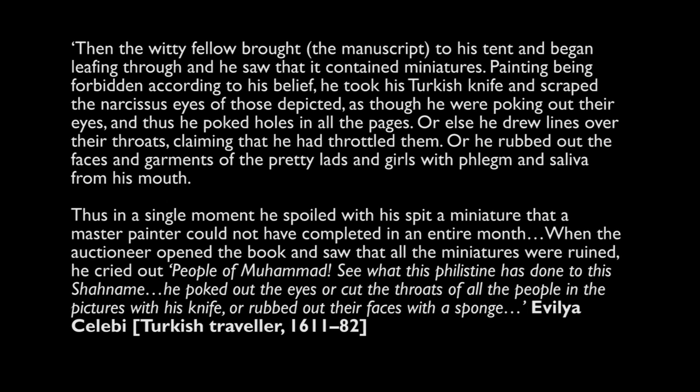Showing these different approaches to whether the religious figure should be depicted, I find this passage really fascinating — from an auction in Turkey during, I think, the 17th century. Someone comes and destroys the faces on a manuscript being sold at the auction, and the auctioneer's reaction is: 'People of Muhammad, see what this Philistine has done to this Shanameh' — a famous illustrated book. 'He poked out the eyes or cut the throats of all the people in the pictures with his knife or rubbed their faces with a sponge.' It shows that reactions change from person to person, from town to town, and in this case the person who did it is being called a Philistine — quite an interesting mix.